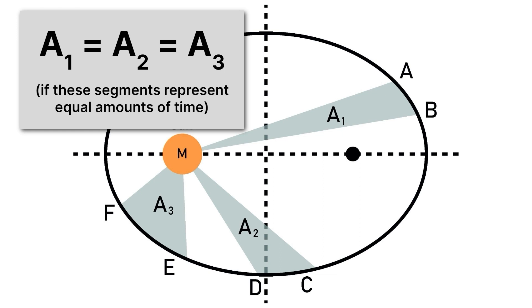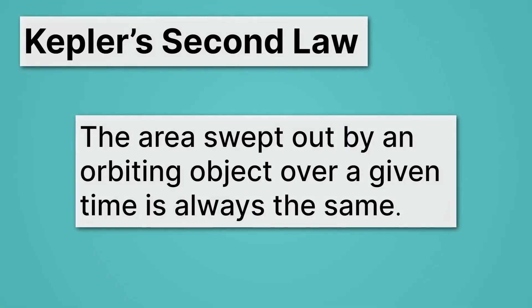I hope you're still with me. Let's read Kepler's second law one more time: the area swept out by an orbiting object over a given time is always the same. All right — there you have it, that's Kepler's second law.